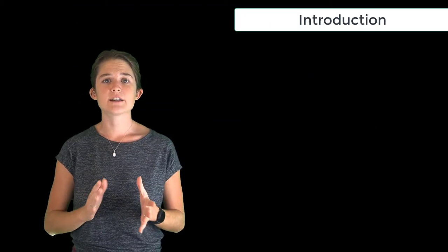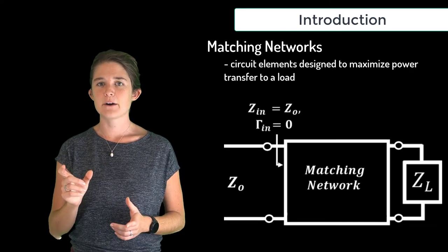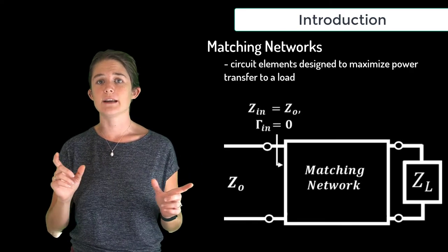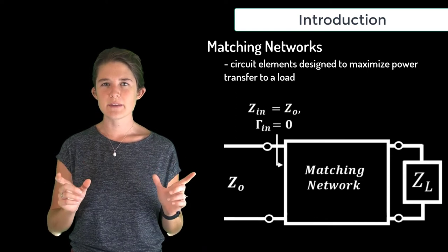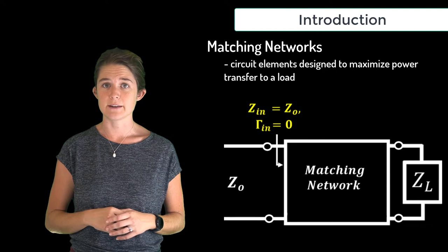We will begin this module with a discussion of matching networks, which are circuit elements designed to maximize power transfer between a transmission line and a load by transforming the input impedance of the load to match the characteristic impedance of the feed line.